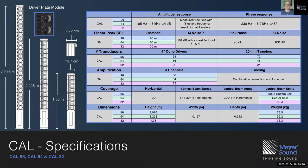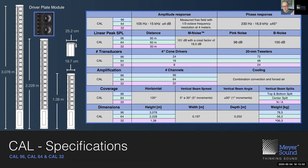In terms of dimensions, the CAL96 with 96 transducers is a longer column, whereas the CAL32 is shorter. Width and depth are the same across models, and weight is proportional to the number of transducers — as little as 36kg for the CAL32 to as much as 80kg for the CAL96.